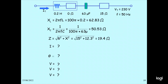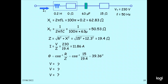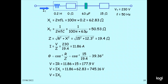Z has to be calculated: Z is the square root of R squared plus X squared, so the square root of 15 squared plus (XL minus XC) squared, giving approximately 19.4 ohms. Then I equals V divided by Z: 230 divided by 19.4, giving 11.86 amperes. Theta equals arccos of R divided by Z: arccos of 15 divided by 19.4, giving 39.126 degrees. VR equals I times R: 11.86 times 13 equals 177.9 V. VL equals I times XL: 11.86 times 62.83 equals 745.5 V. VC equals I times XC: 11.86 times 55.3 equals 599.29 V.